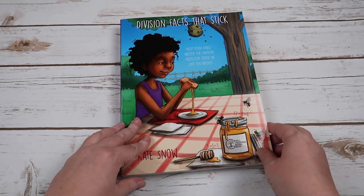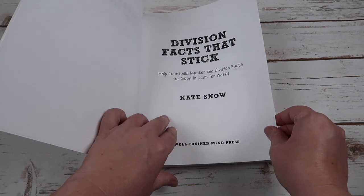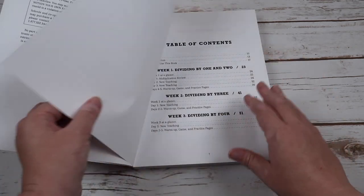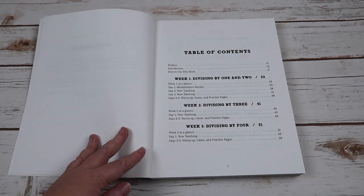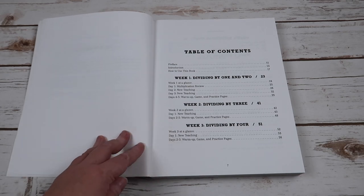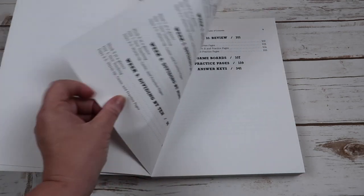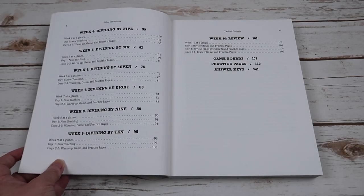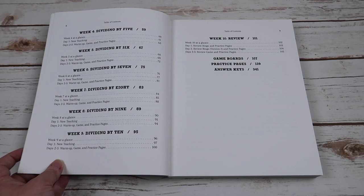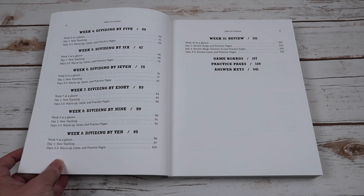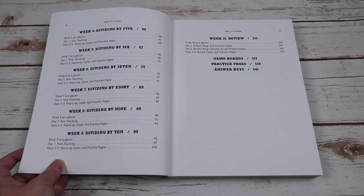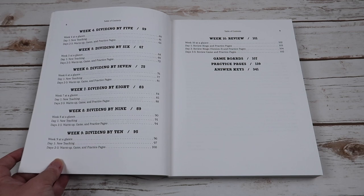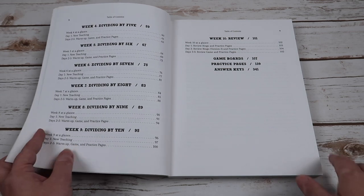All right. And last we have the division facts that stick. So week one, we are dividing by one and two. Week two, dividing by three. Week three, dividing by four. Week four, dividing by five. Week five, dividing by six. Week six, dividing by seven. Week seven, dividing by eight. Week eight, dividing by nine. Week nine, dividing by 10. And week 10 is the review.